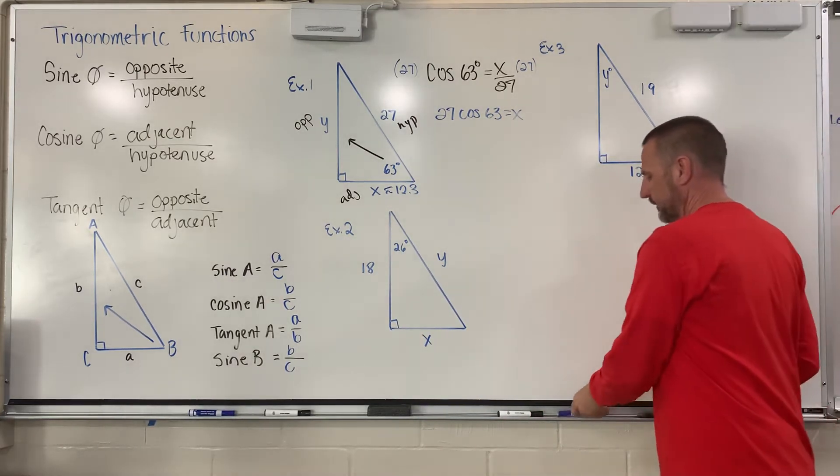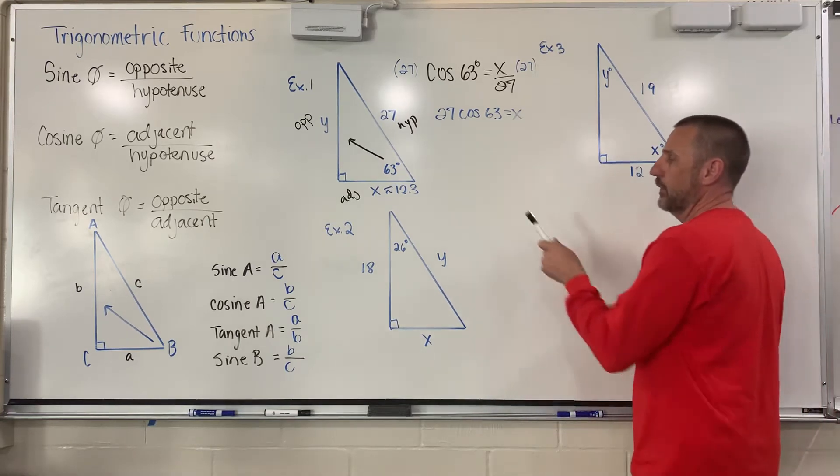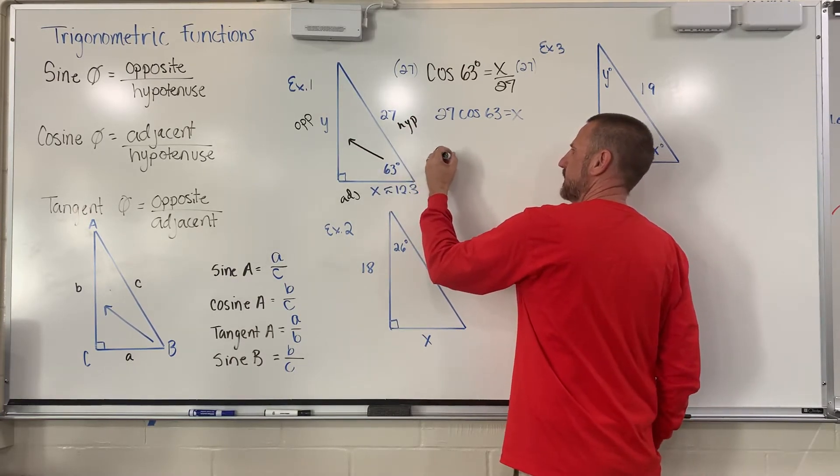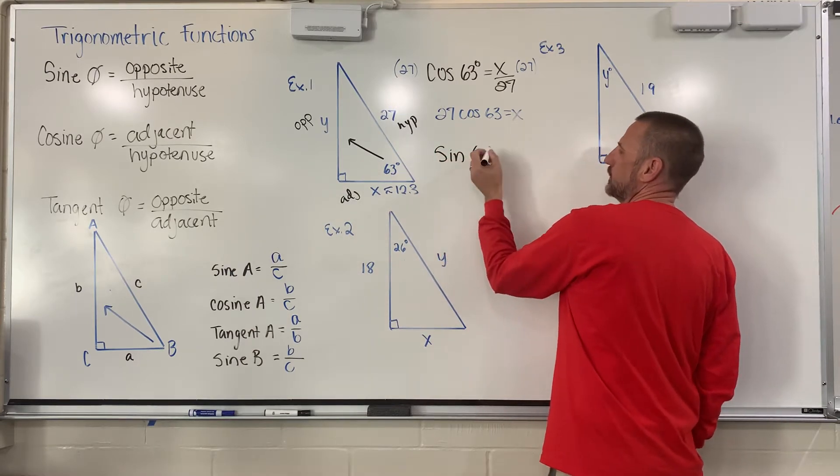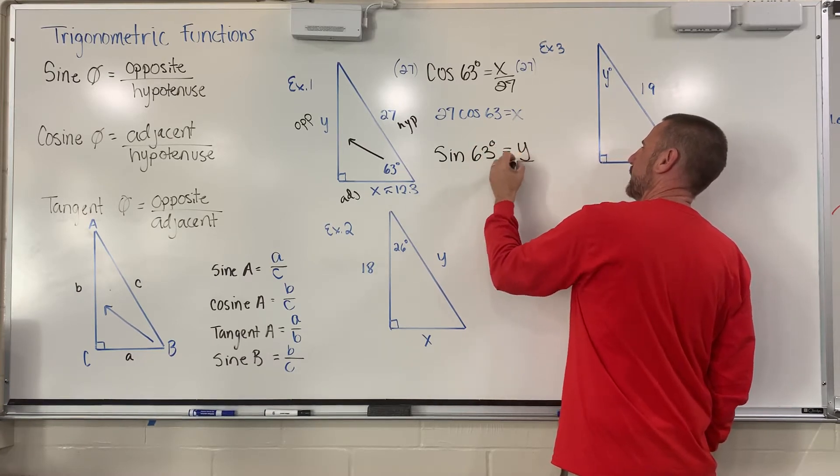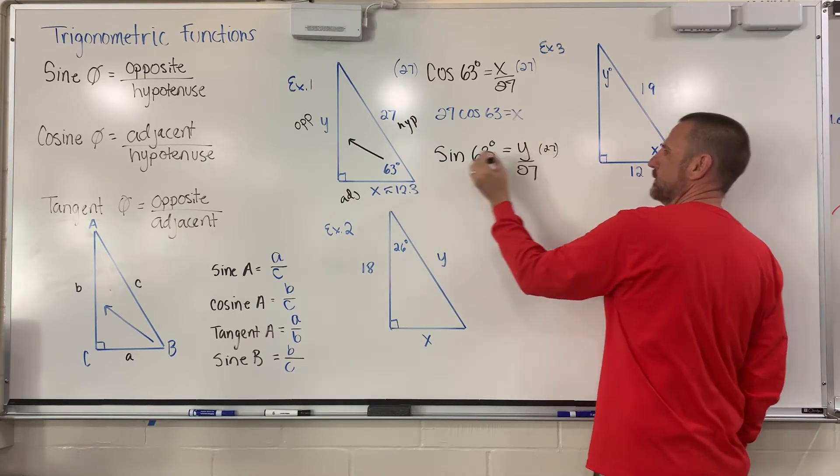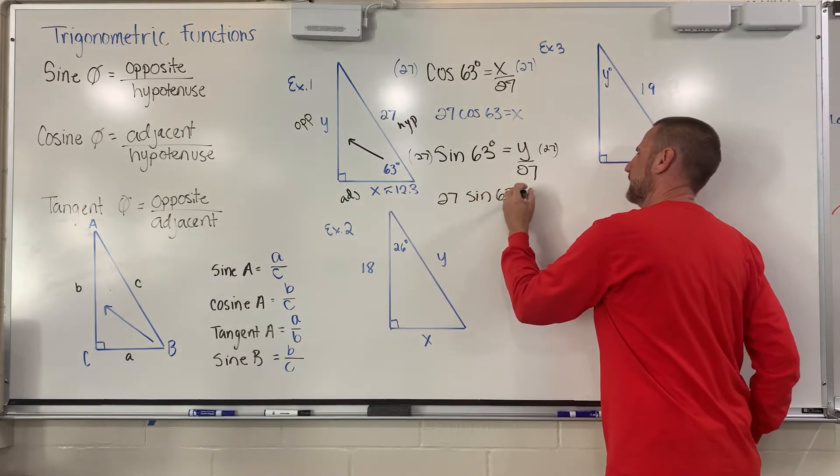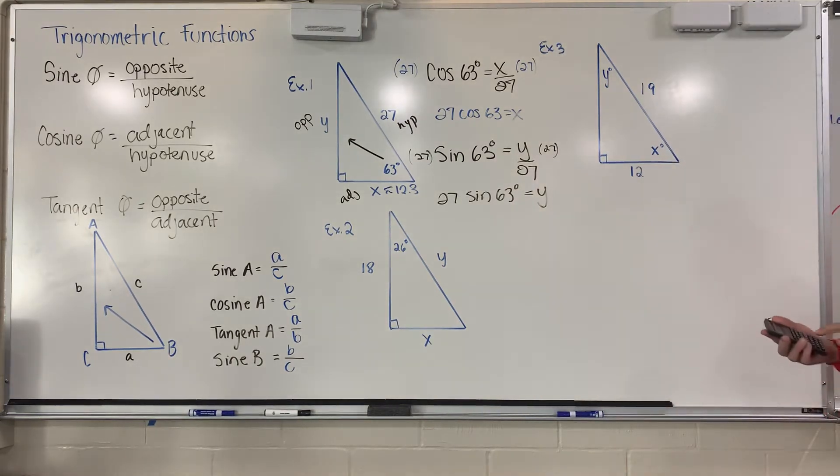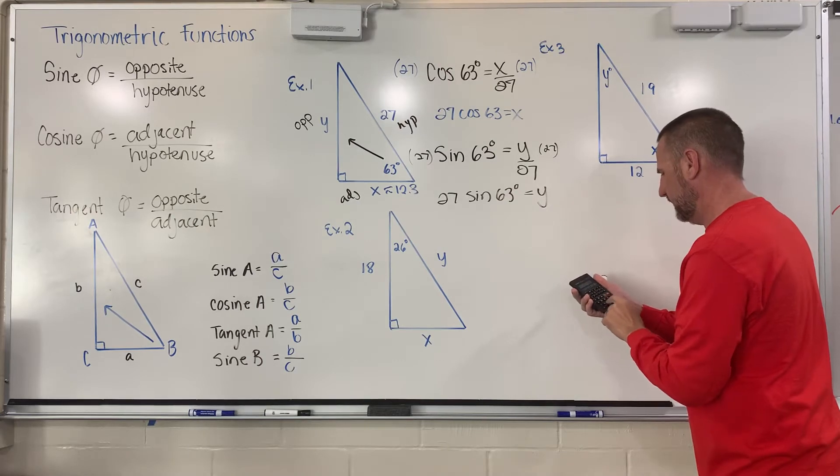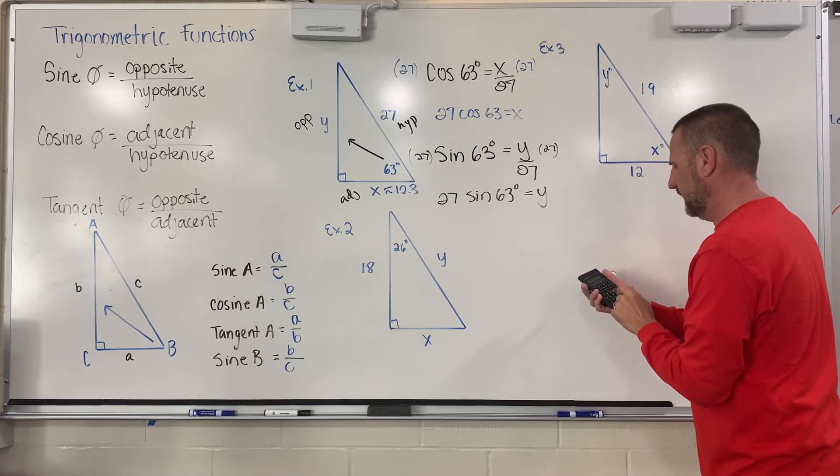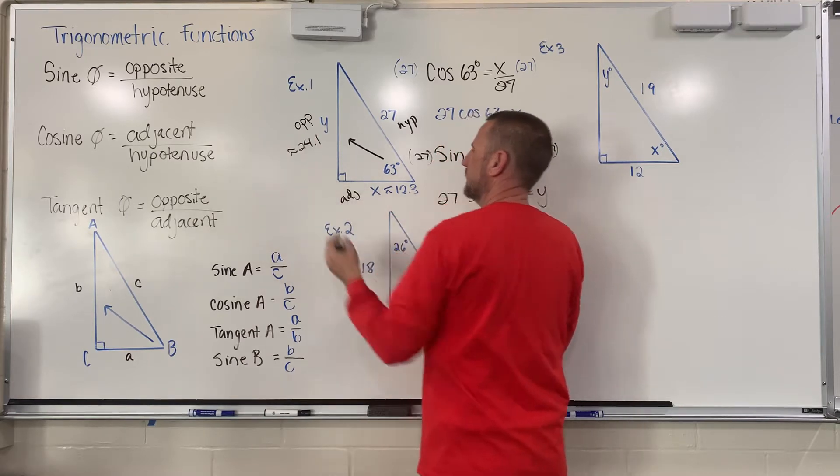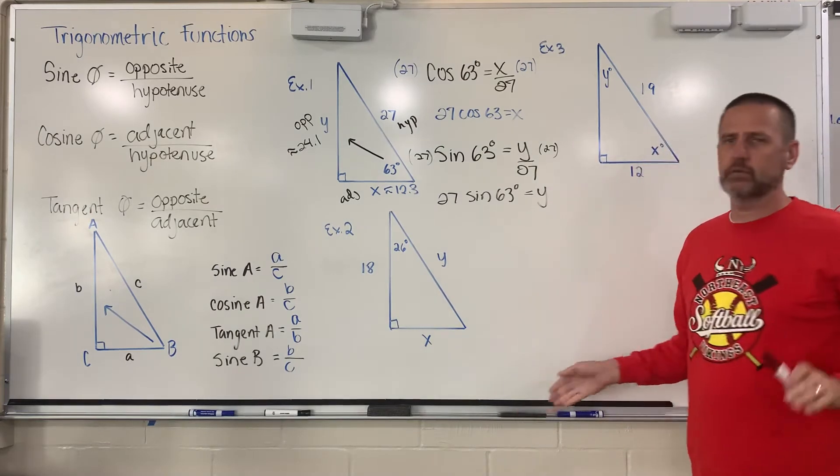If I want to do value of Y, I can now turn around for value of Y and say, back to the 63. In this case, Y is my opposite, and 27 is my hypotenuse. So I just switch functions to sine, and I get Y over 27. I'm going to do the same process. I'm going to multiply by 27 to get the fraction out. And so I have 27 sine 63 equals Y. So I go back and check that. I say, 63 sine times 27, and I get 24.1.